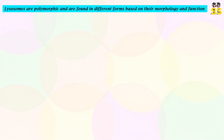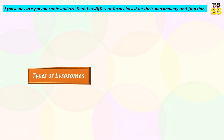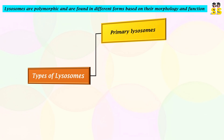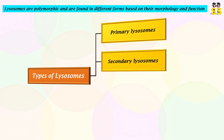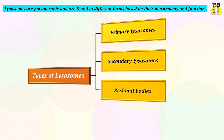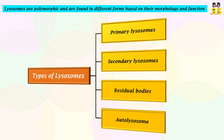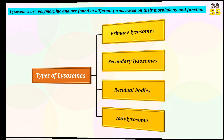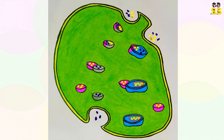Lysosomes are polymorphic and are found in various forms, based on their developmental and functional stages. Types of lysosomes include primary lysosomes, secondary lysosomes, residual bodies, and autolysosomes. In this figure, we can see how lysosomes pass through various stages in the same cell.